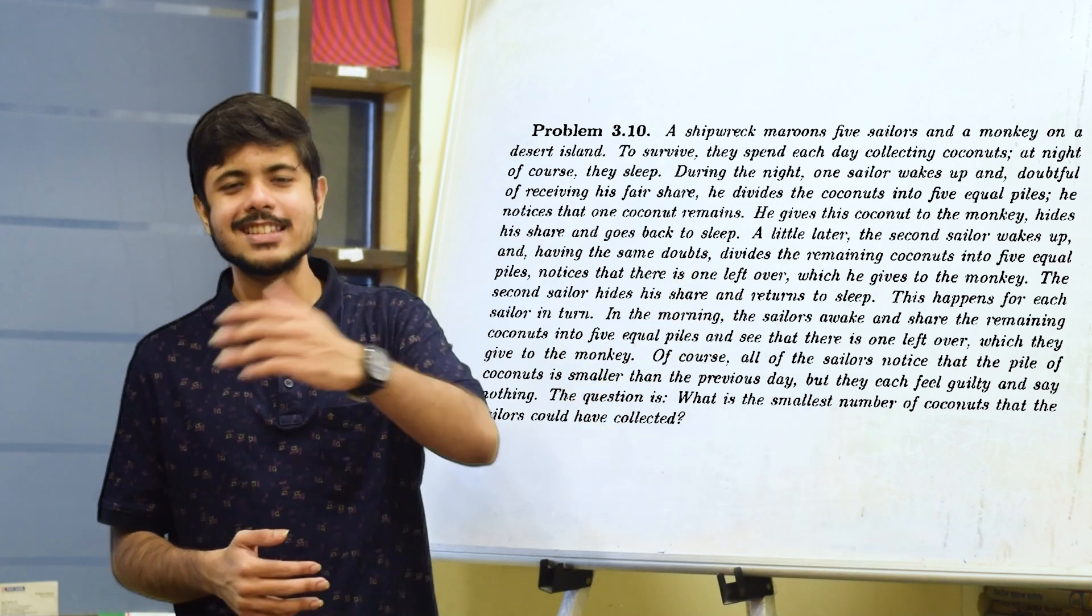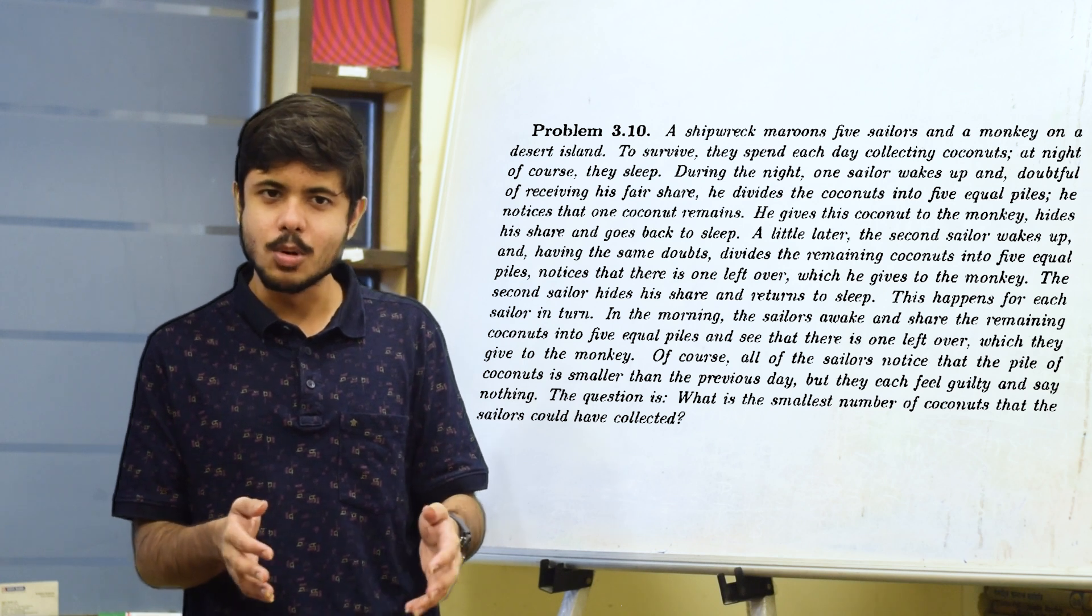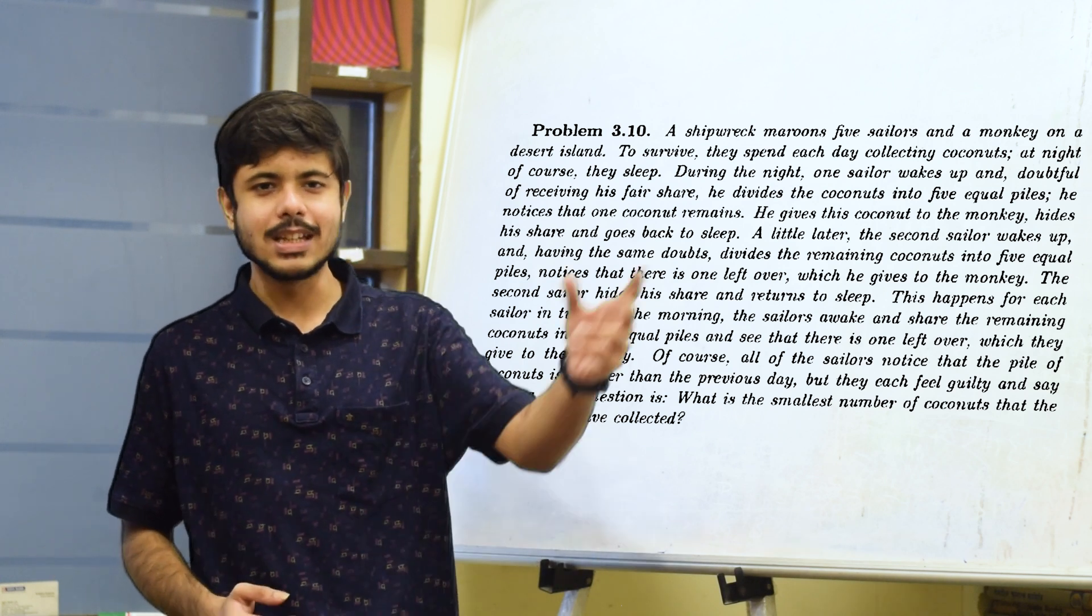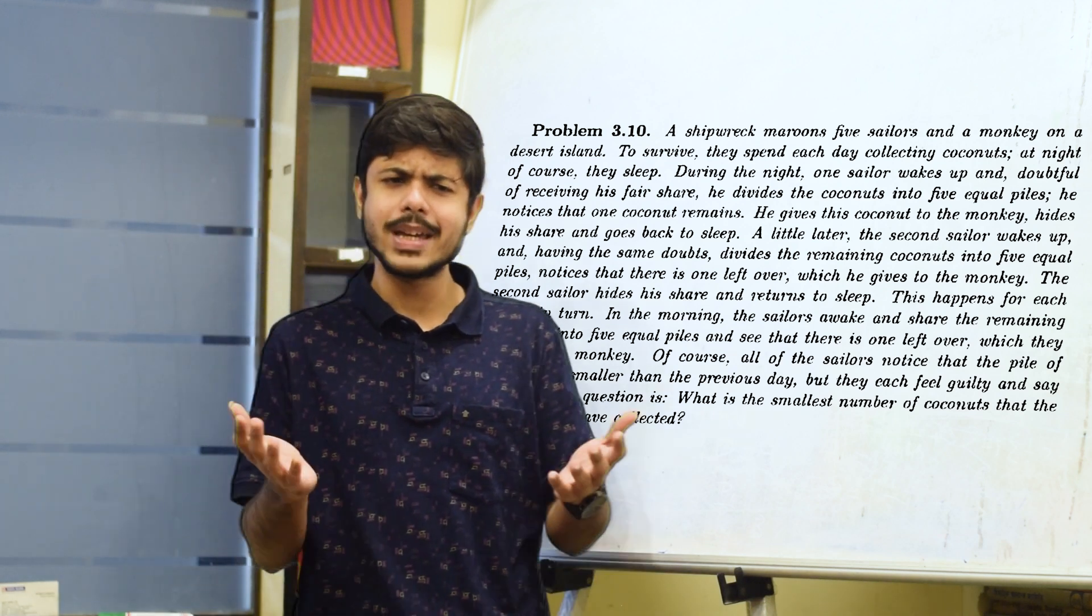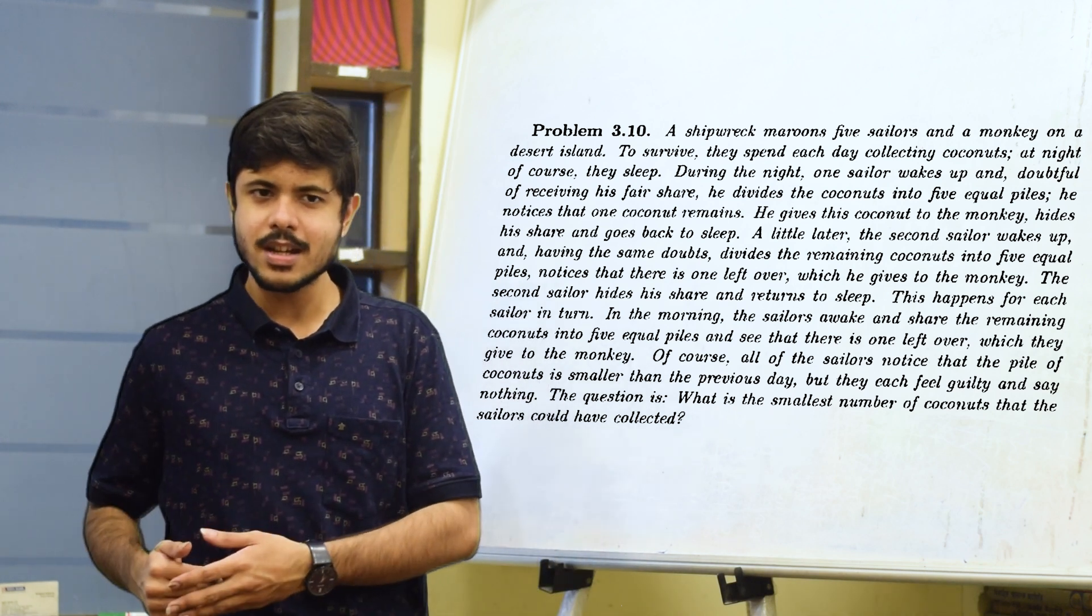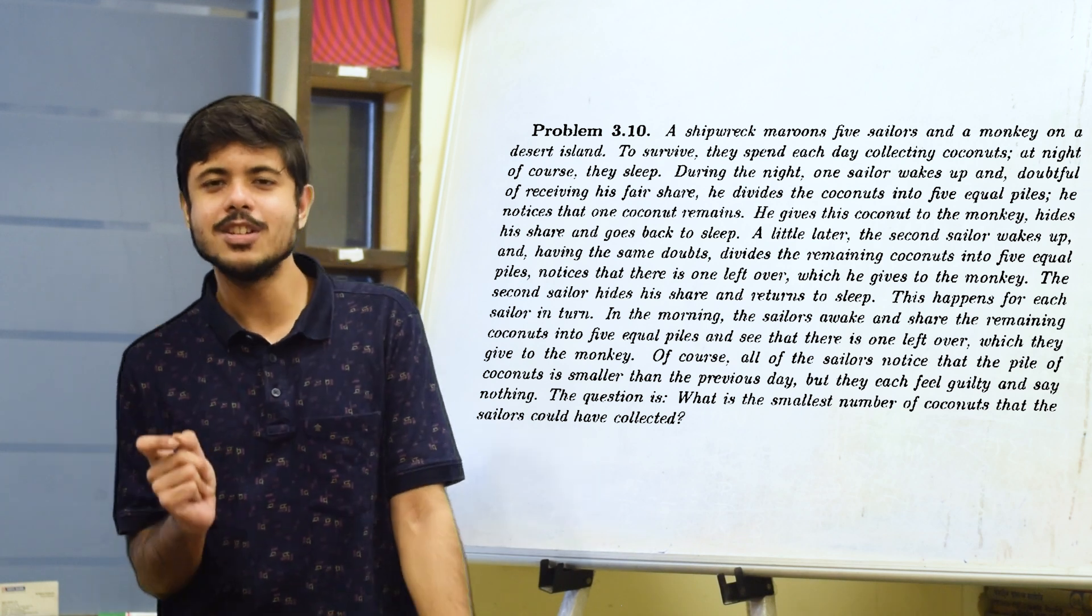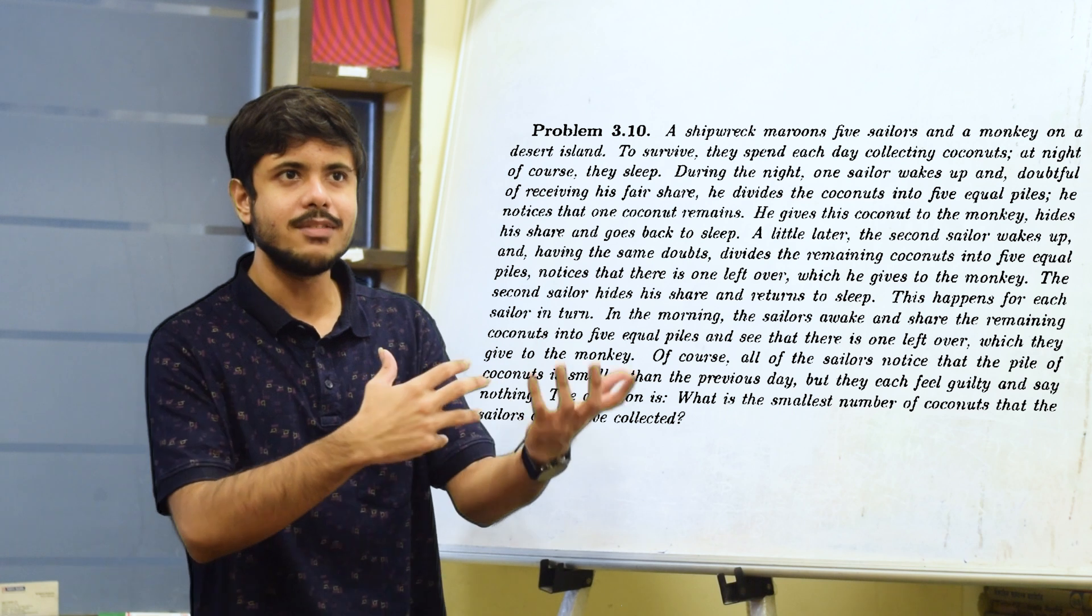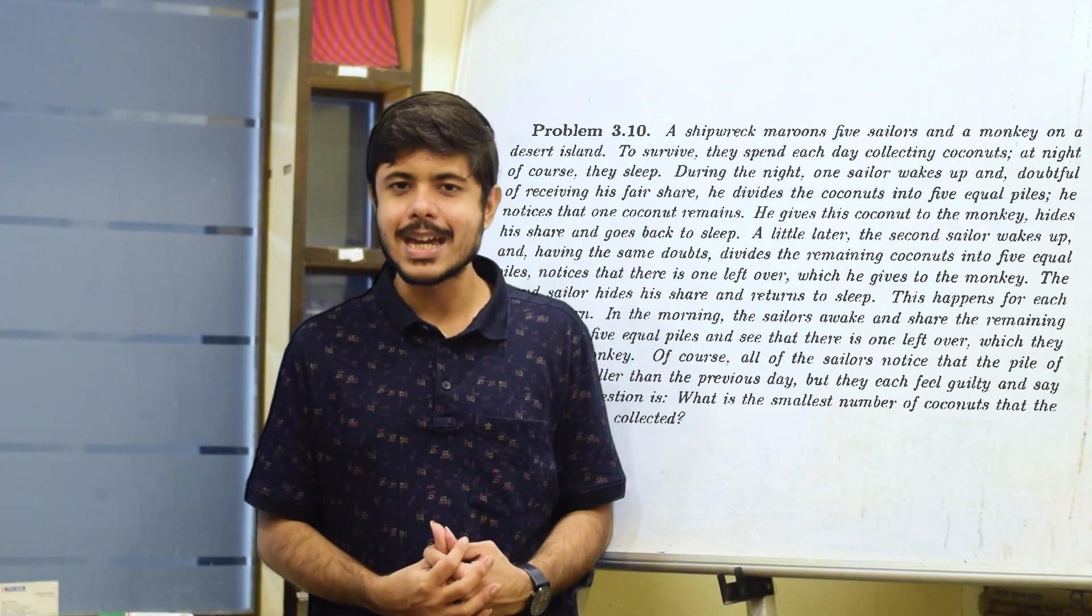While they were sleeping at night, each of these sailors, they had this insecurity about what is going to happen to my share of coconuts. So, one sailor wakes up and then what he does is he just divides the current number of coconuts present into five equal shares, separates his share out and he sees that there is one coconut left. He gives it over to the monkey. The second sailor wakes up again, has the same insecurities, looks at the current number of existing coconuts, divides it into five shares, separates his share, there was one left, gives it to the monkey.